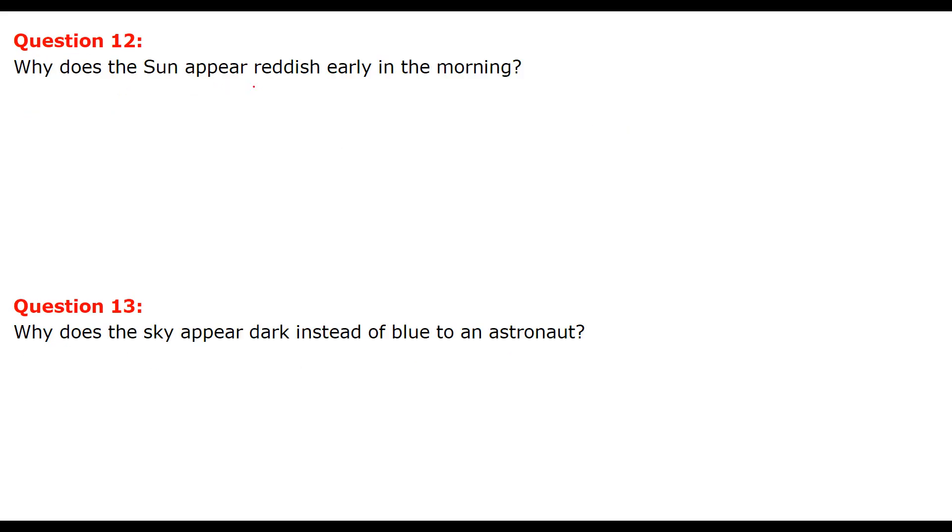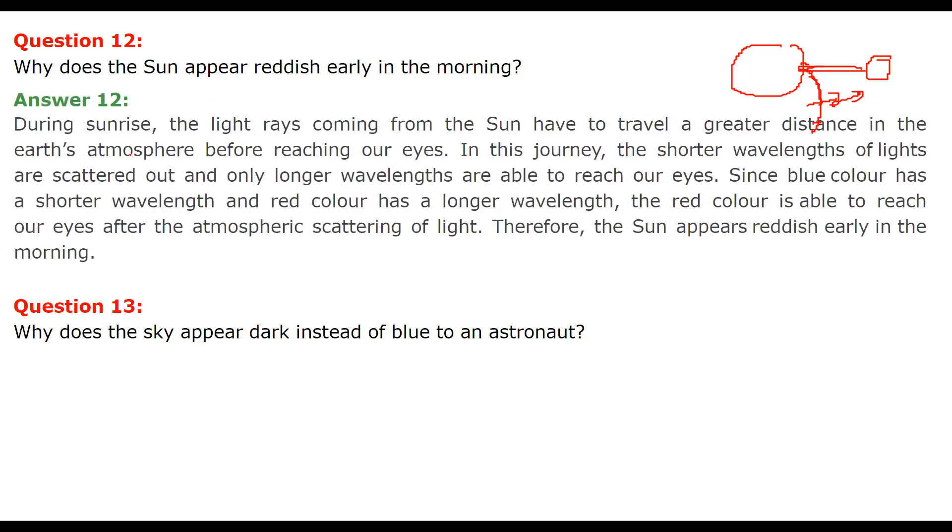Why does the sun appear reddish early in the morning? If this is earth, you are here and sun is here. You are getting light but it has to travel a longer distance. When the sun is here, it is a shorter distance. When it is a longer distance, most of the wavelengths will be scattered away. Here you are getting everything but at this point you will get the reddish or red component of the sunlight.